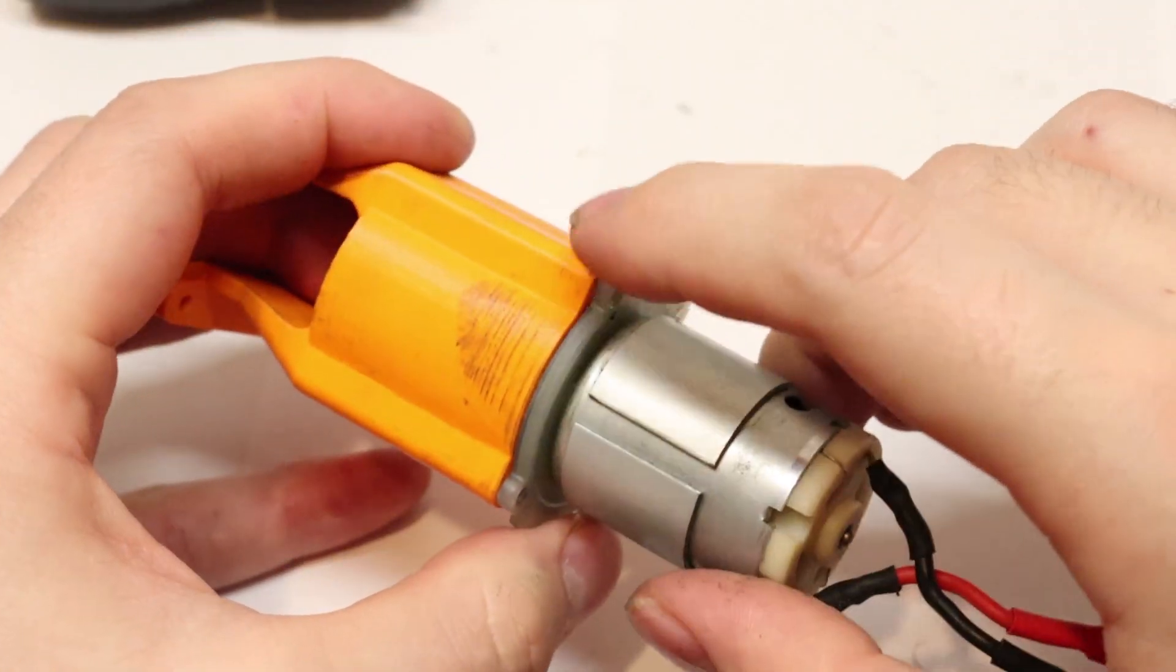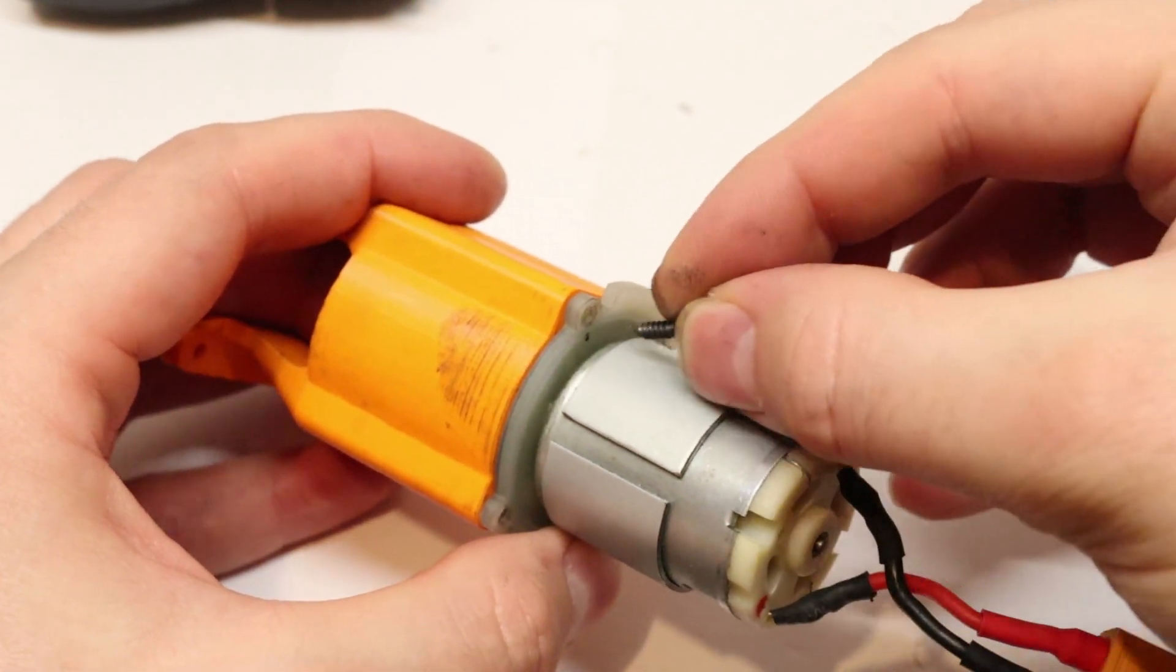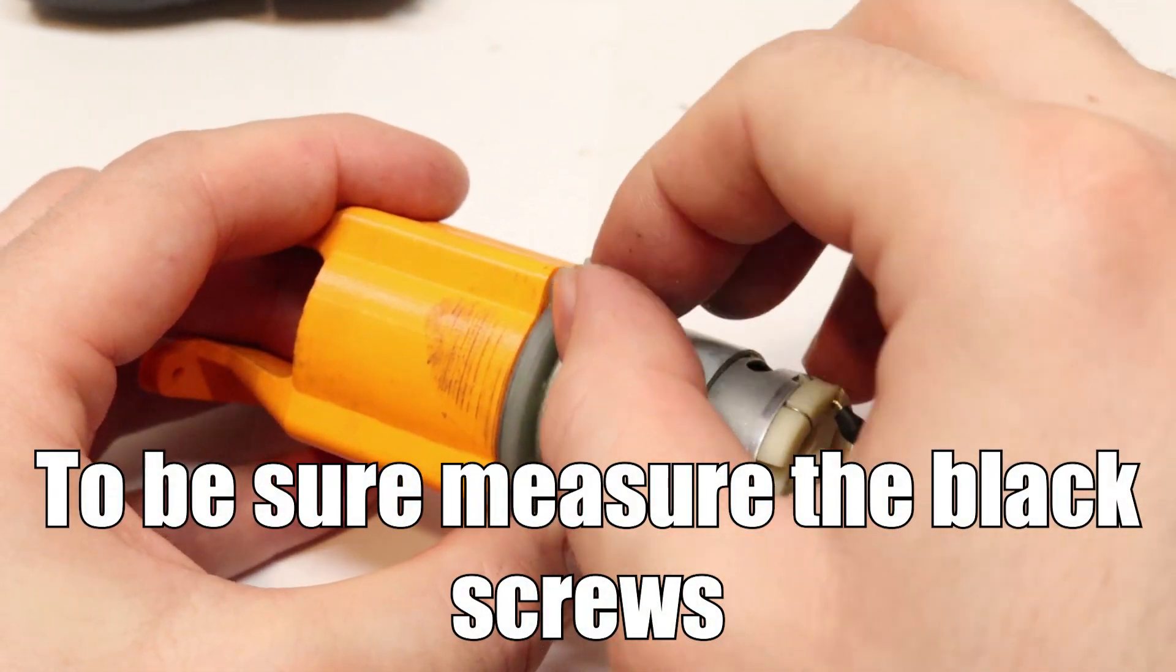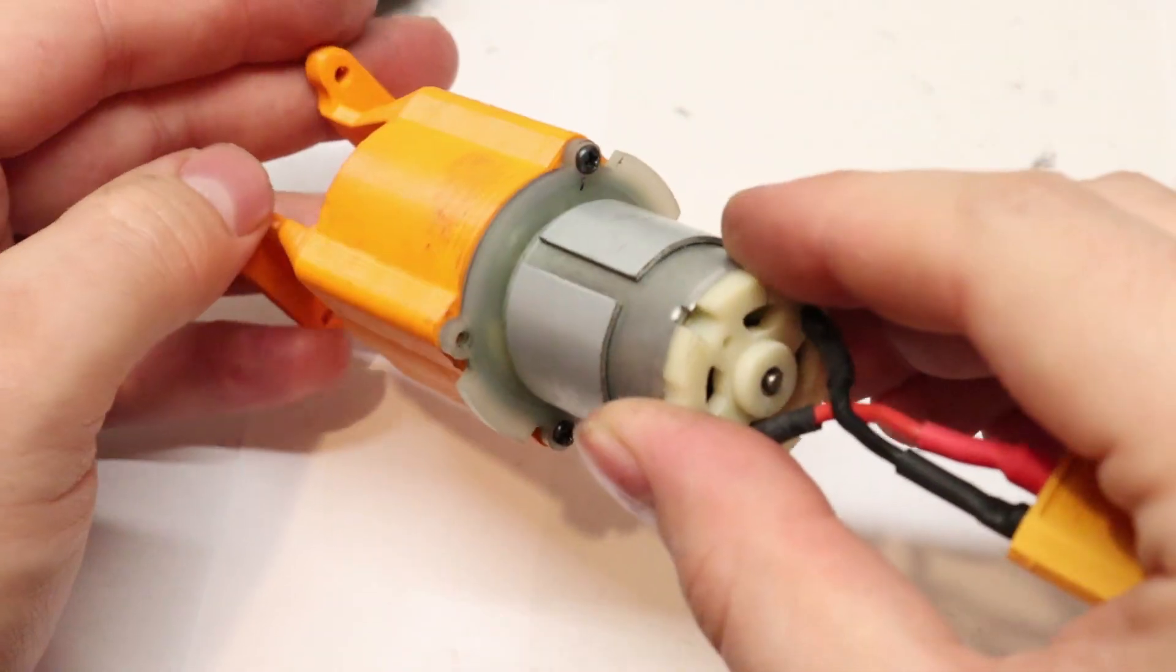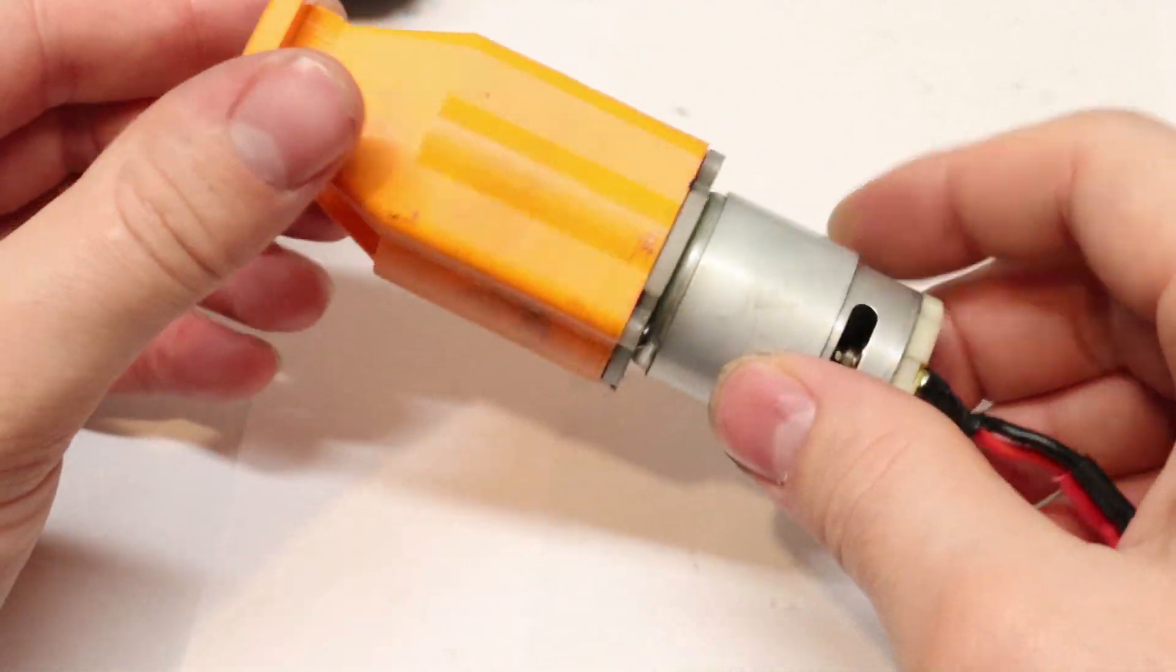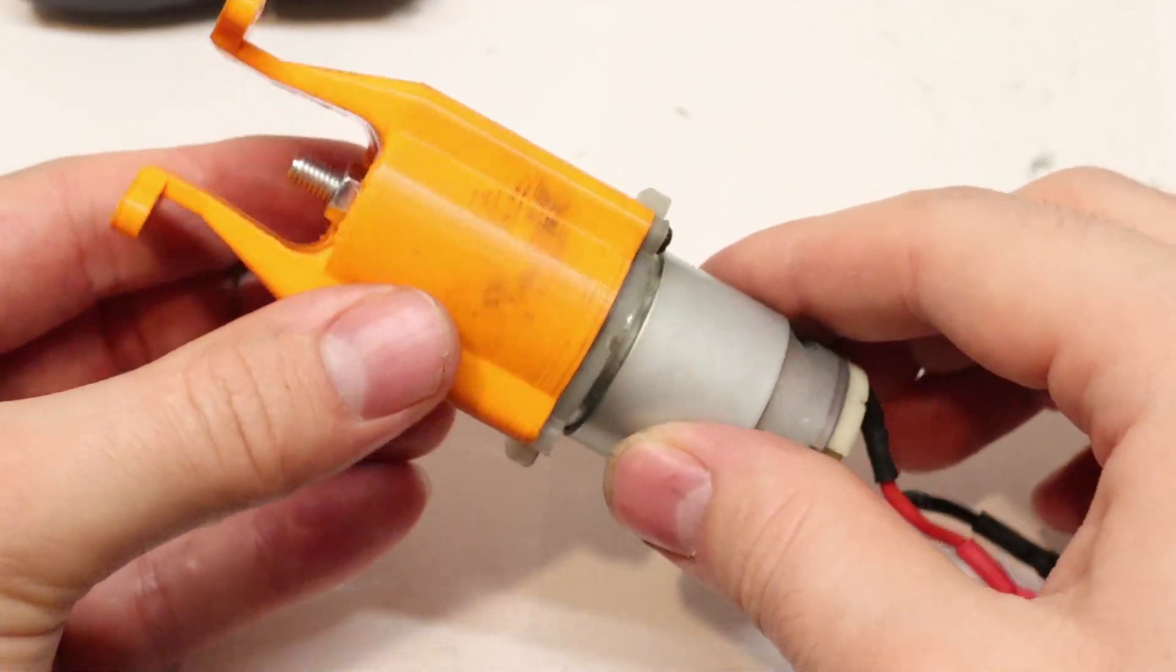Depending on how these holes turned out, you might need to drill them with a 2mm drill bit. Then screw this back into place with 4 screws. I've just added 2 screws for demonstrative purposes, but you should add all 4.